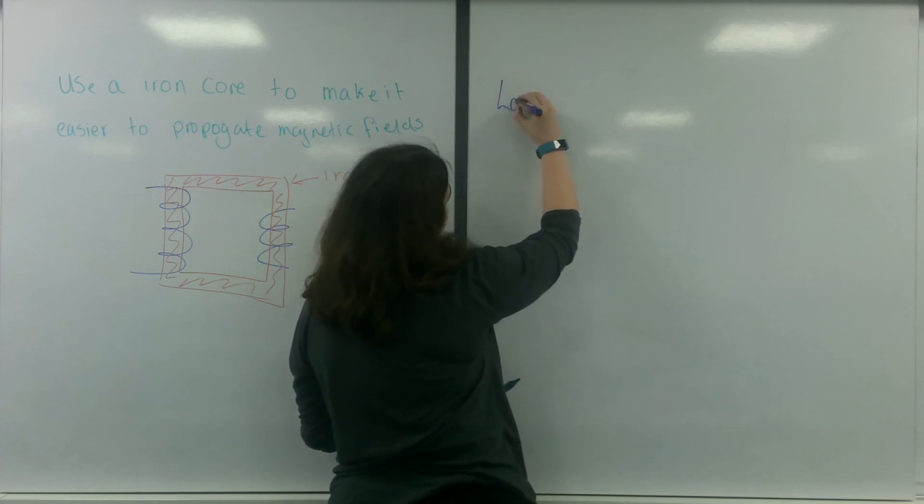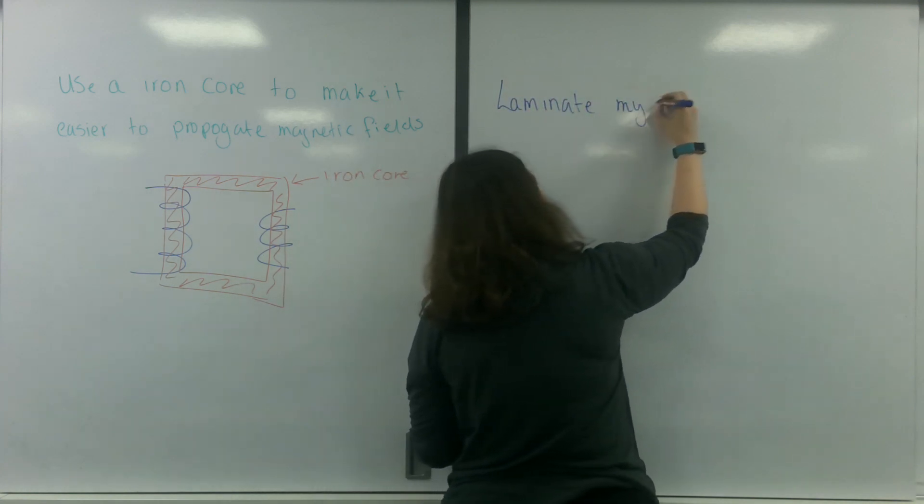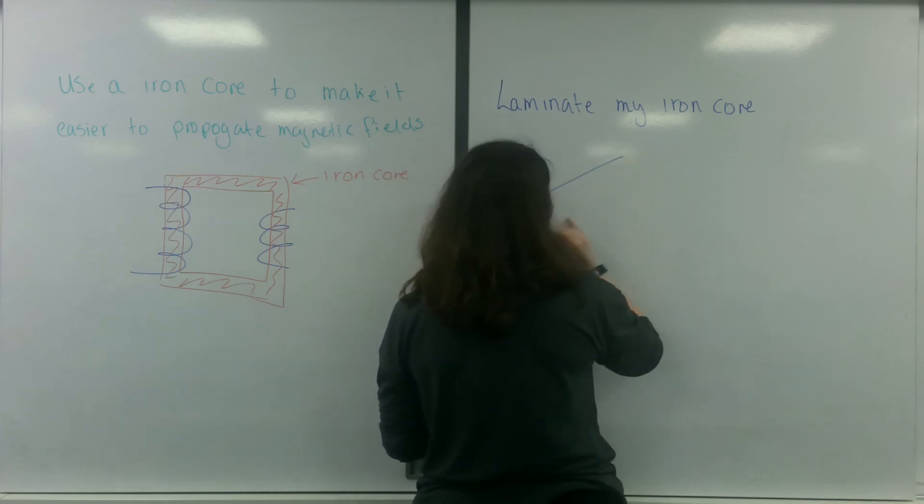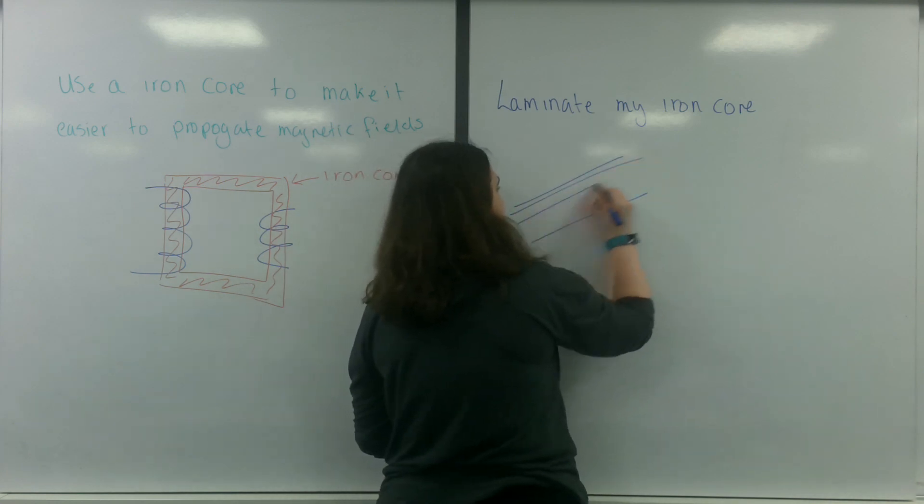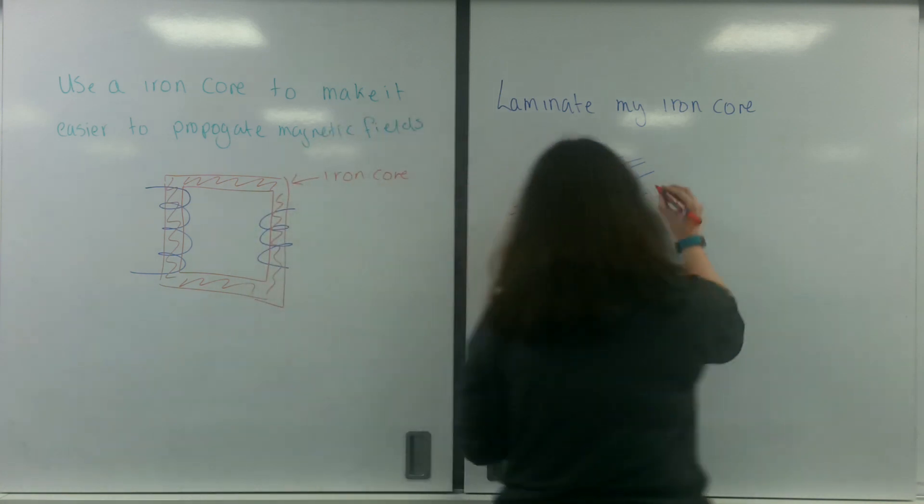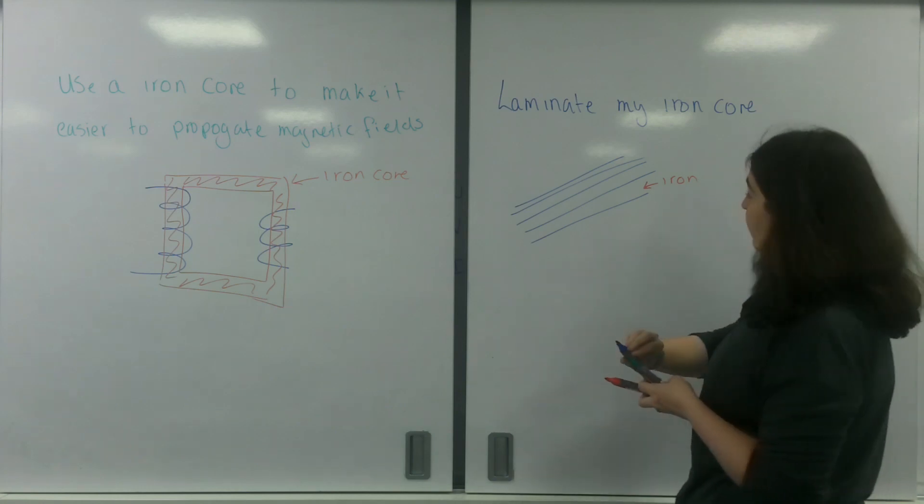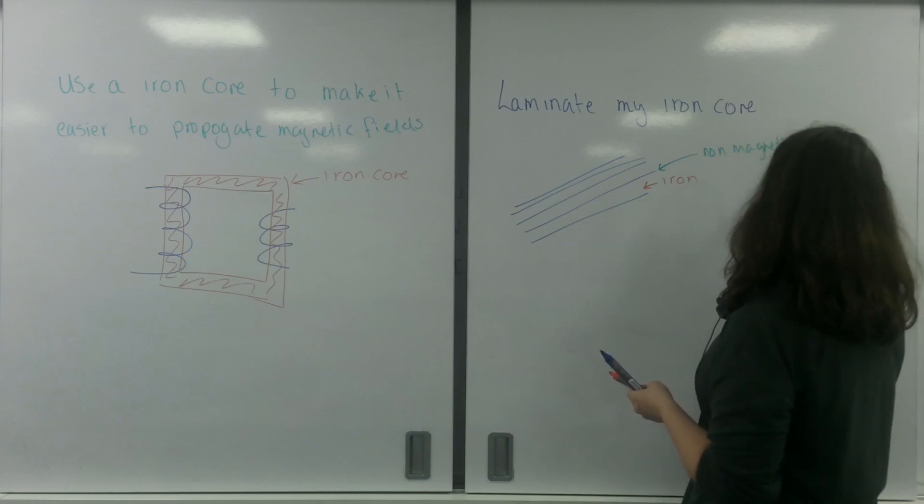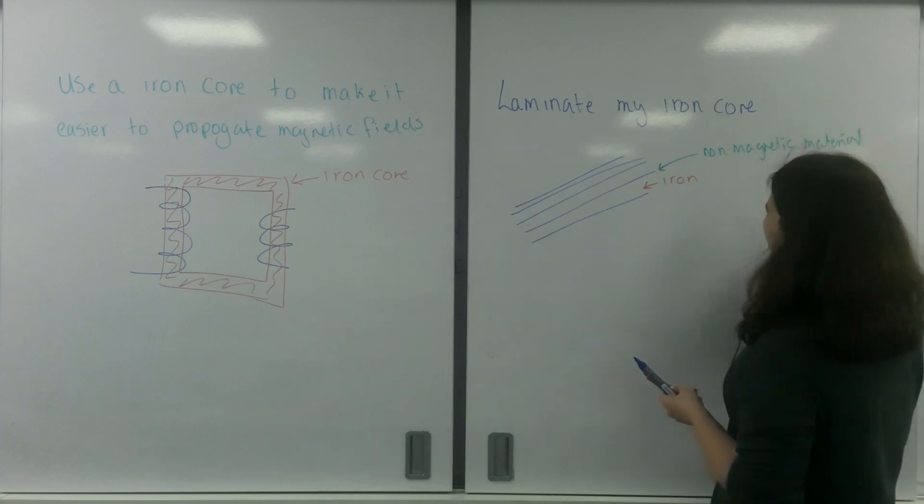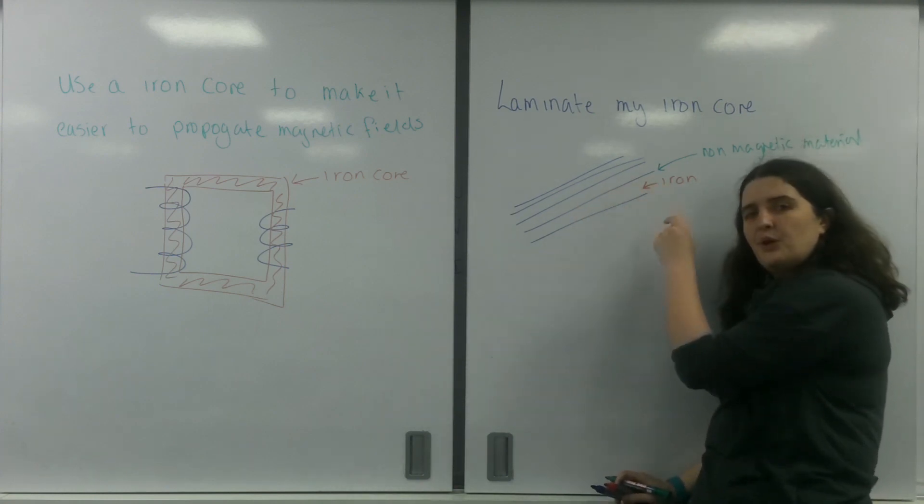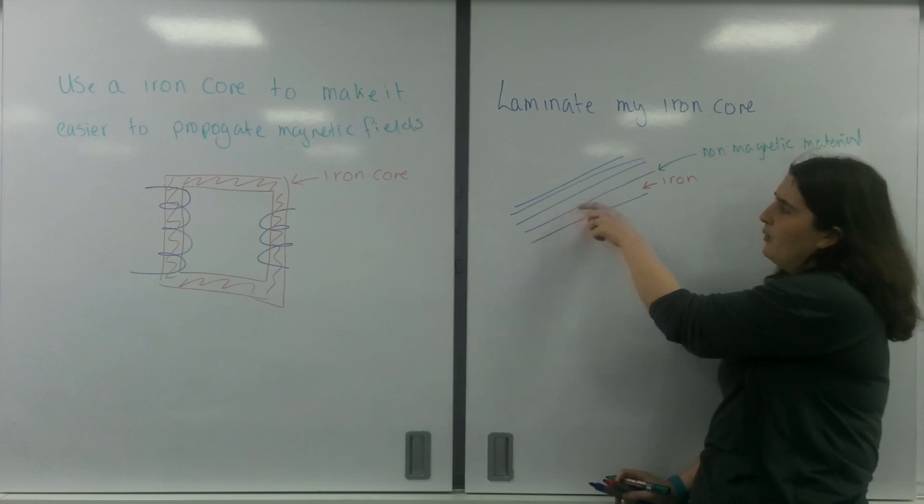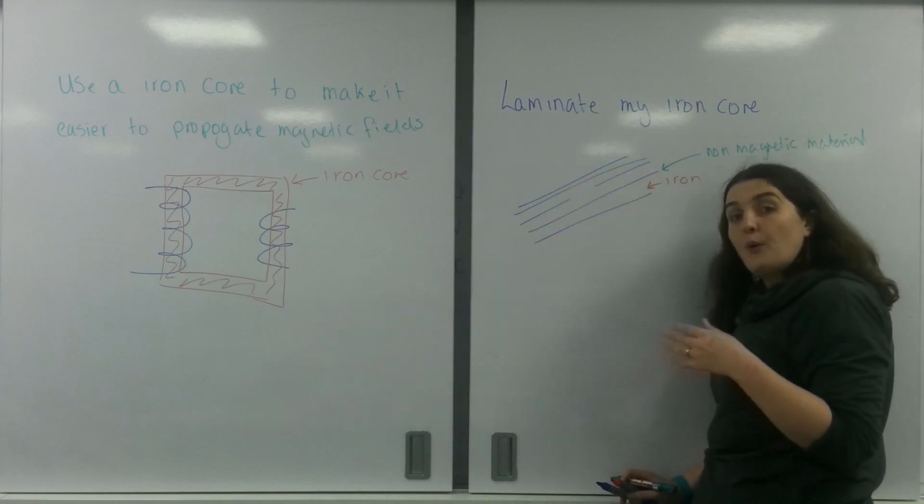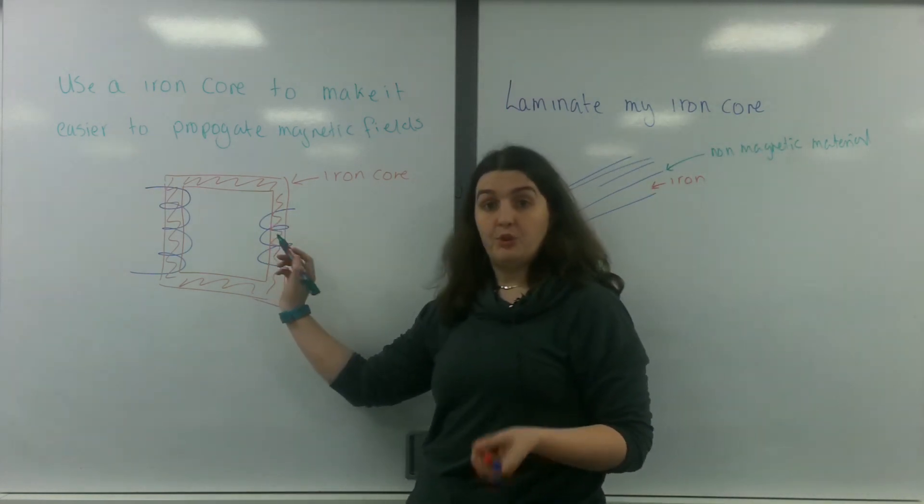So I can laminate my core. What I mean by this is if I took my 3D shape again—I'm only going to look at the top—I basically make these layers here where this part is the iron and this part in the middle is a non-magnetic material. This doesn't propagate any magnetic fields, which means only the magnetic fields will propagate in these parts here. It's almost like funneling the magnetic fields so they're going to cross the coil at right angles, which is what you want.